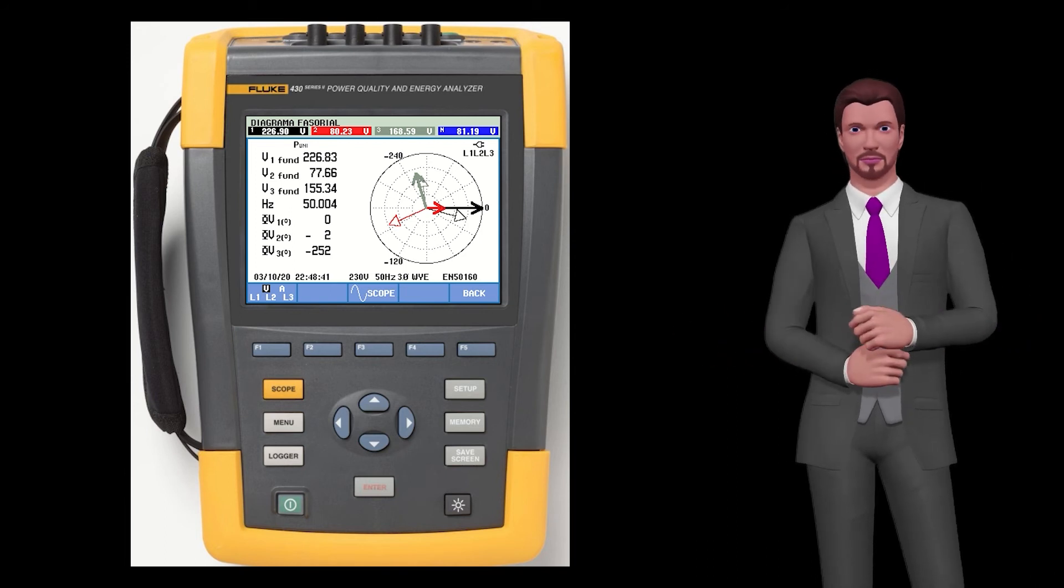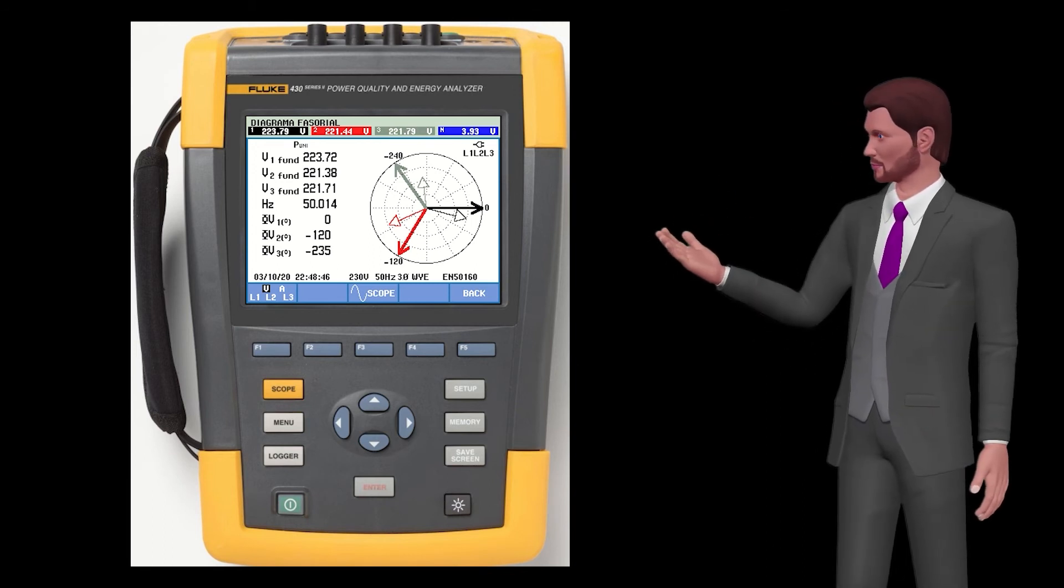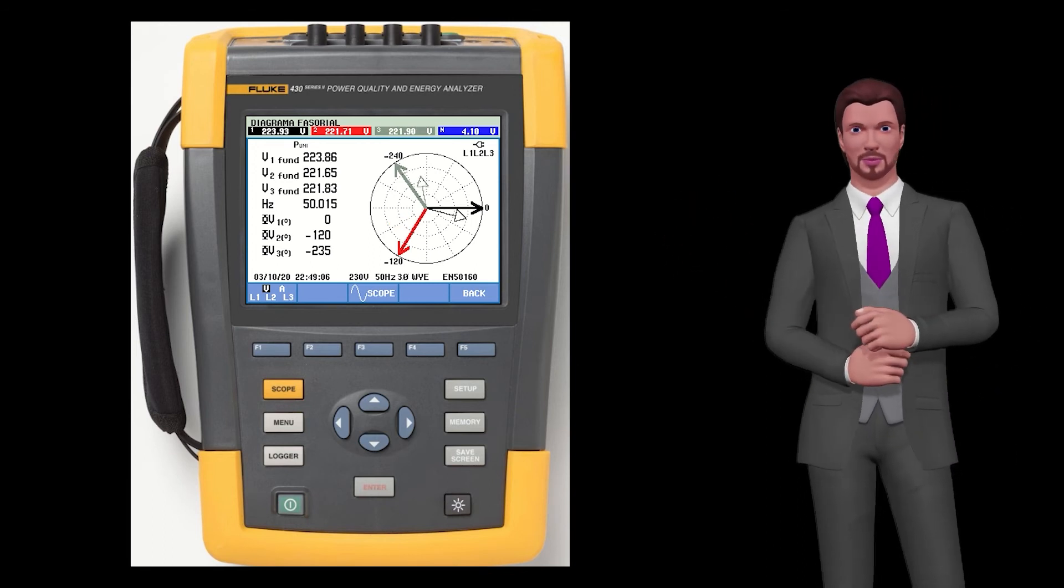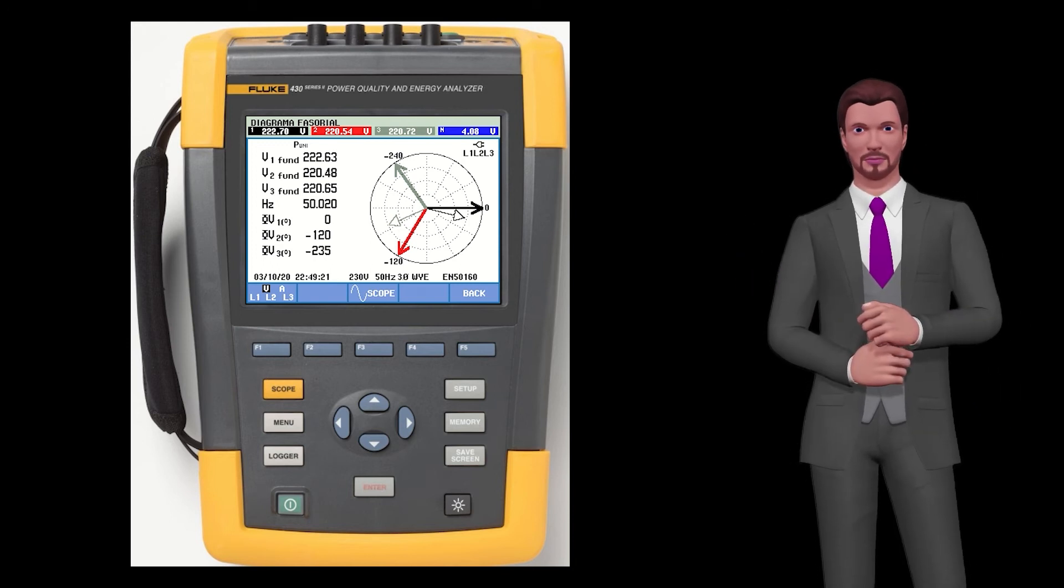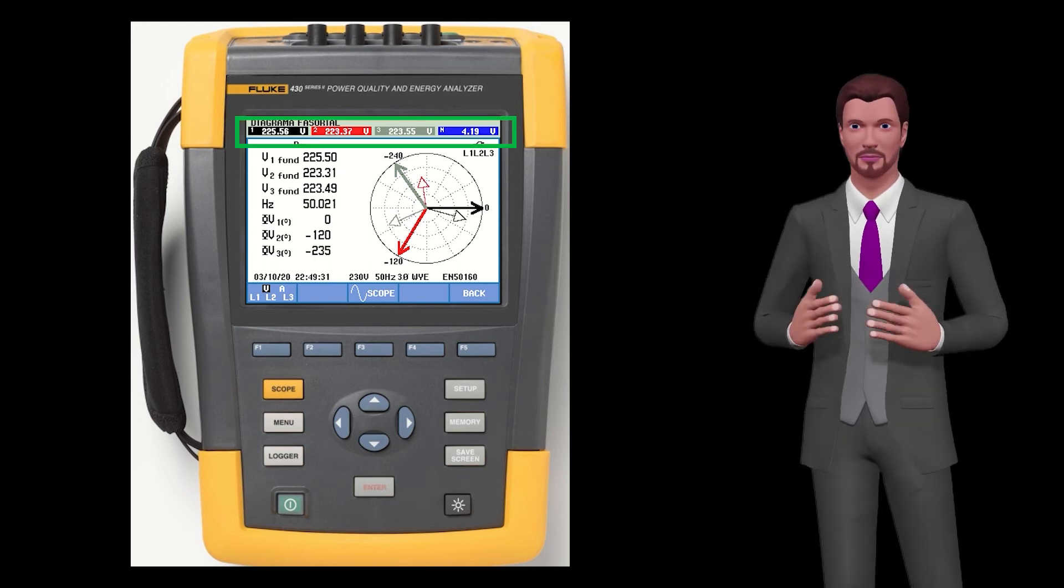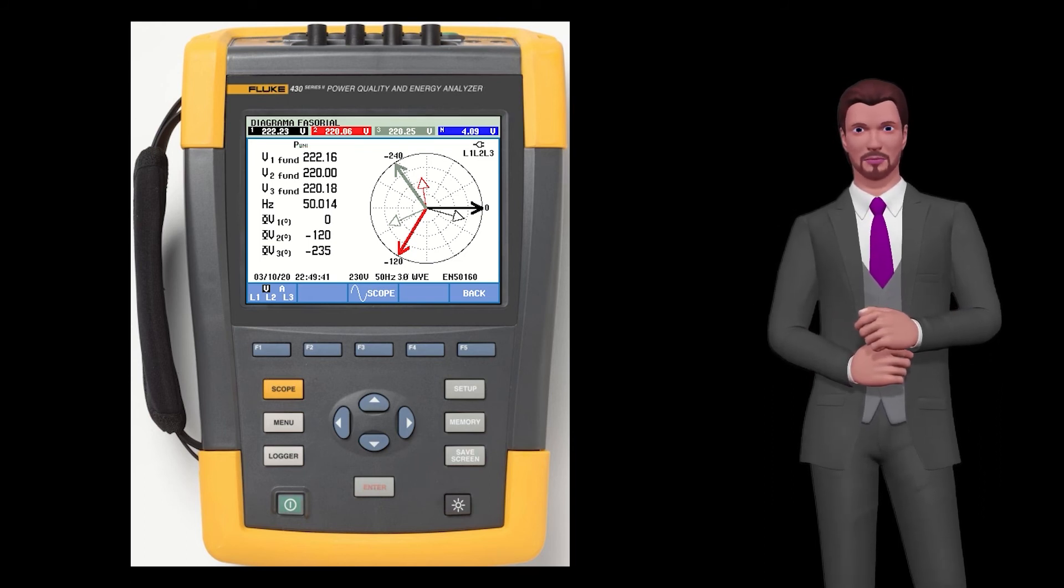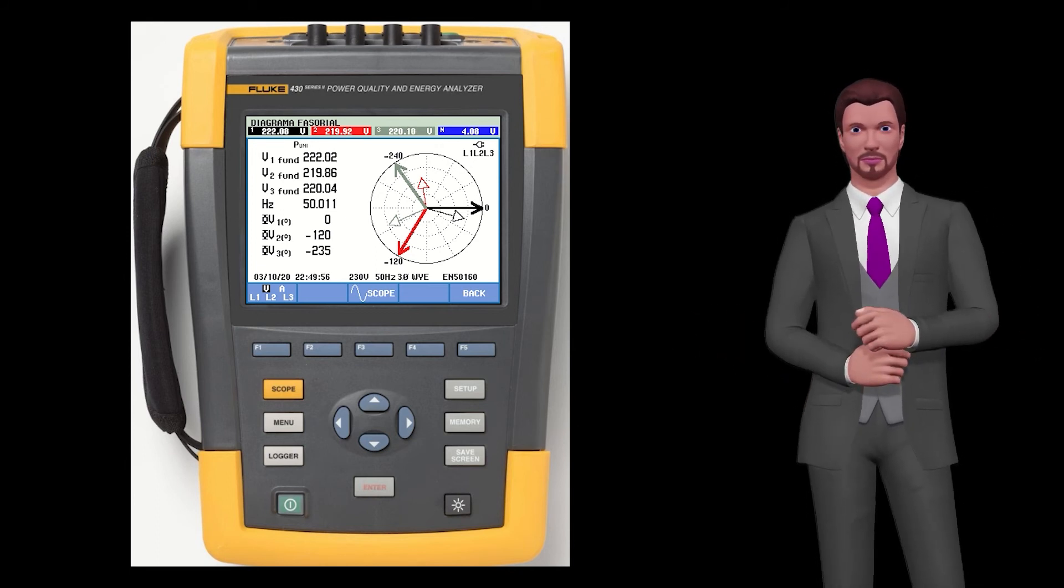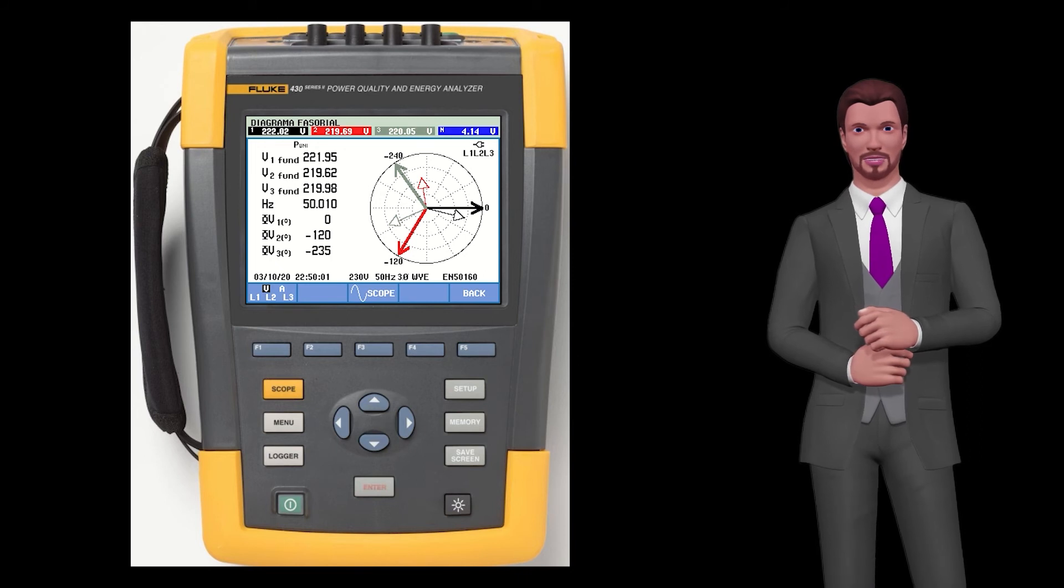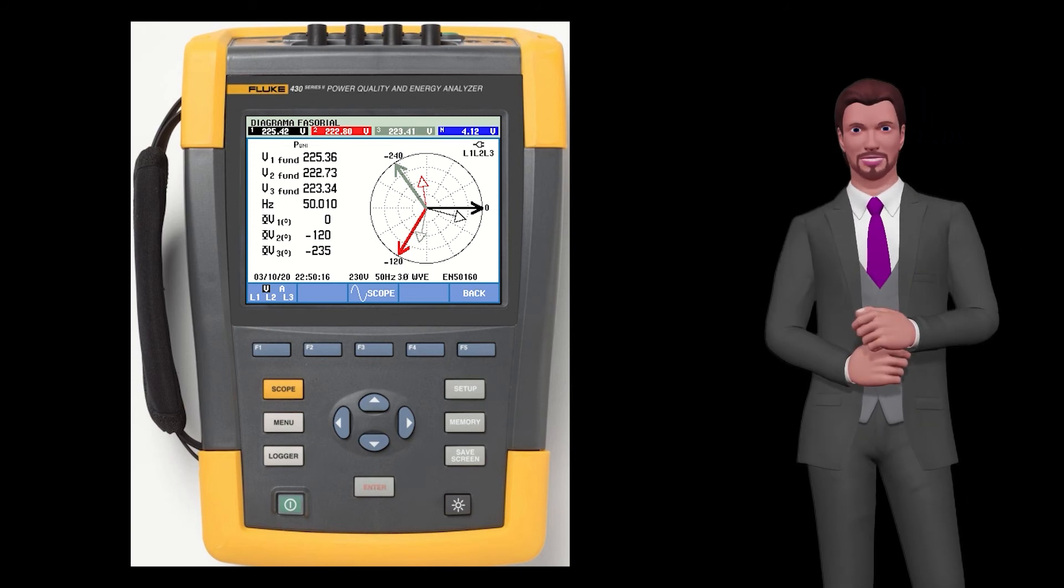Let's swap voltage cables 2 and 3 back as they were at the beginning. Now suppose that we exchange two current probes, for example 2 and 3. The situation repeats itself, but this time with the current phasors. The current phasor pointing at seven o'clock is gray and the one pointing at 11 o'clock is red, contradicting the sequence of the color bar at the top of the screen. Likewise, the angles between the voltage and current phasors of phases 2 and 3 can now exceed 90 degrees. Again, these two situations give us an indication that something is wrongly connected.